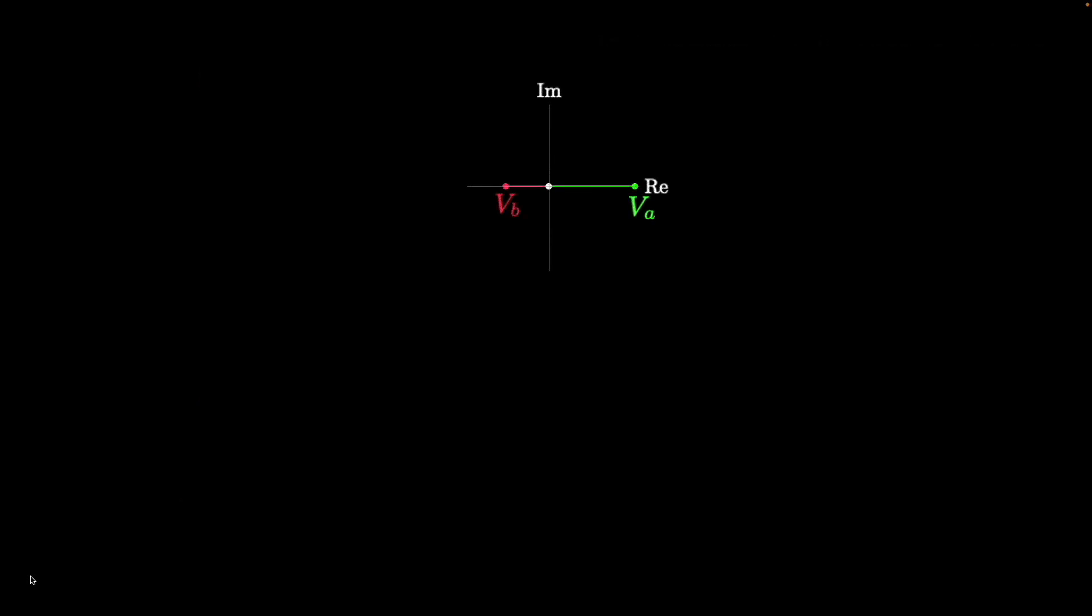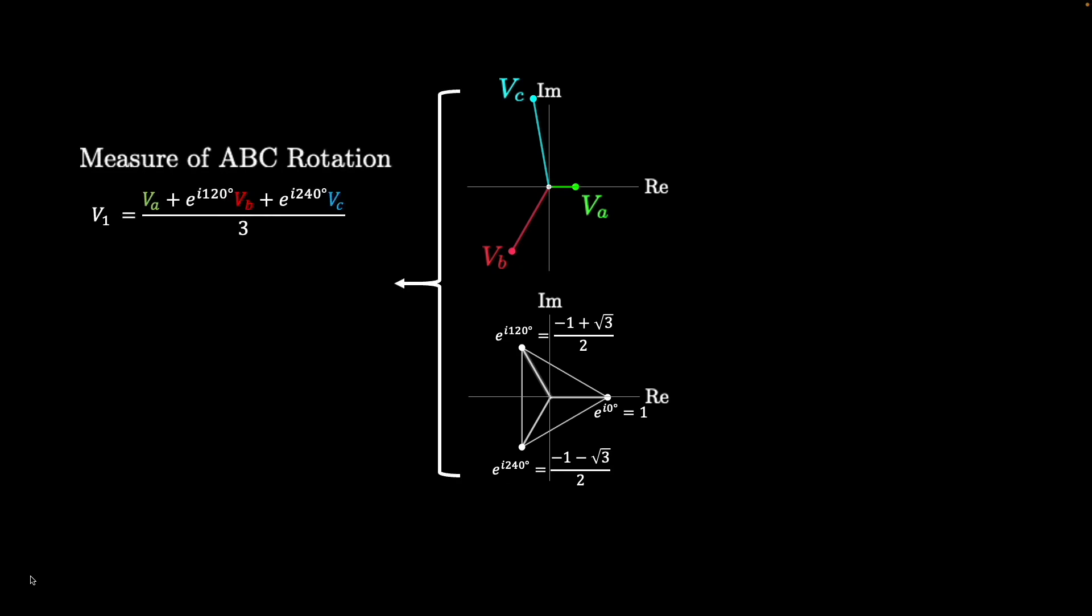To build a complete understanding of three-phase imbalance, it helps to look at the two-phase case in the imaginary plane. For two phases, operations were performed on VA and VB that used roots of unity of 1, specifically 1 and minus 1. These two values mapped onto the complex plane form a line. In the three-phase case, the third roots of unity are used, which trace out a triangle in the complex plane. These roots can be multiplied against VA, VB, and VC to find V1, the value that represents the amount of ABC rotation in the system.